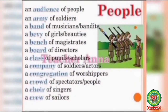Now we are going to discuss Collective Nouns of people, animals, or things one by one. For people, look at these examples: an audience of people, an army of soldiers, a band of musicians, a bevy of girls. Audience, army, band, and bevy each mean a group — so these are Collective Nouns.